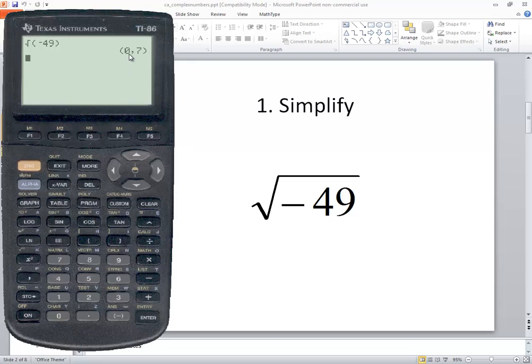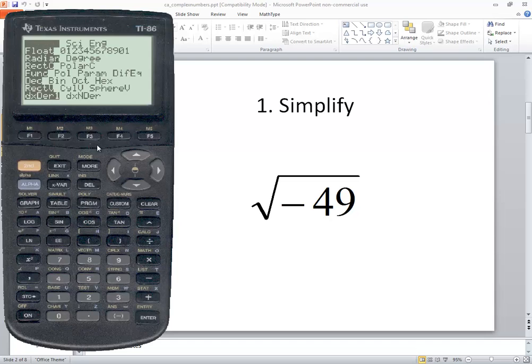You'll get zero comma seven with parenthesis around it, or it's possible, depending upon what your mode is. If I do second mode, if you have different settings you might get a different format. There is a polar form.